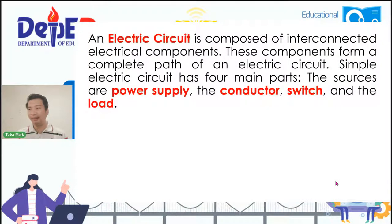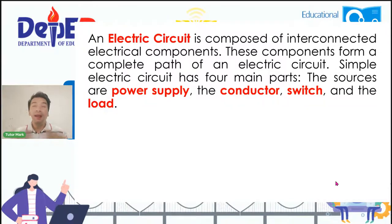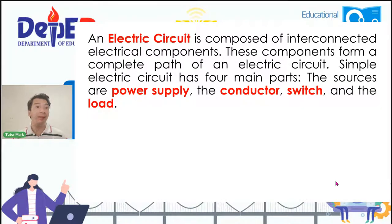An electric circuit is composed of interconnected electrical components. These components form a complete path of an electric circuit. A simple electric circuit has four main parts, namely the power supply, the conductor, the switch, and the load. Sa bahay, meron tayong mga electrical equipment. Lahat ng mga ito ay napapatakbo sa pamamagitan ng tinatawag nating electric circuit. Apat ang main parts nito.